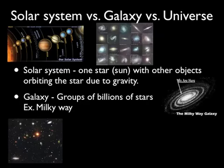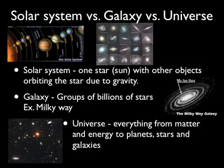Galaxies are groups of billions of stars. Our galaxy, the Milky Way, has billions of other solar systems within it — billions, not millions. And finally, the universe is everything: matter down to an atom, which is smaller than a cell — tiny, tiny things — matter, energy, light, heat, planets, stars, galaxies. The universe is everything in it.